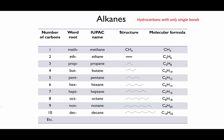Hydrocarbons that have nothing but single bonds are collectively known as alkanes. This table shows you the first ten alkanes, with one carbon being added to each successive molecule. There are a few things to note here. Firstly, the word root of each name is important — it indicates how many carbons there are in the chain, and we're going to use these roots repeatedly as we learn to name more complex molecules, so you should memorise them.